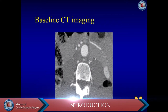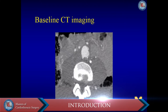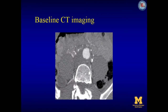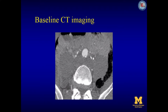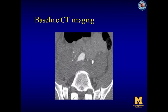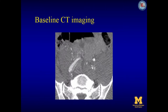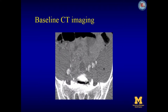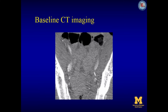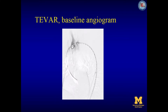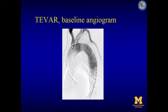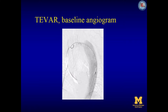First, we describe briefly a case of a patient with acute type B dissection and malperfusion. This 58-year-old man presented with acute chest and abdominal pain and inability to move the left lower extremity. Preoperative CT imaging revealed type B aortic dissection with abdominal involvement and malperfusion in the left iliac and femoral arteries.